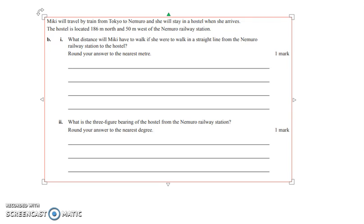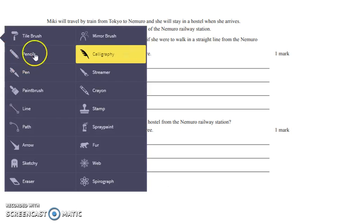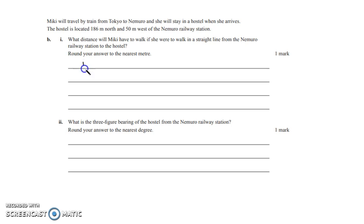Alright, moving onwards. Mickey will then travel by train from Tokyo to Narimo and she will stay in a hostel when she arrives. The hostel is located 186 meters north and 50 meters west of the railway station. What distance will Mickey have to walk if she were to walk in a straight line from the railway station to the hostel? Round your answer to the nearest meter. So this is a straightforward trigonometry question. So let's just draw in our diagram first.